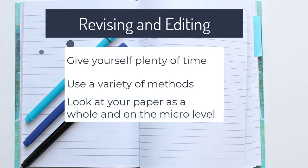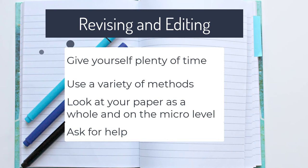Look over your paper both as a whole and at the micro level. Do you have an introduction, body, and conclusion? A clear thesis statement? Are your paragraphs complete? Are you missing any important information? Are your transitions smooth? For smaller things like grammar, it can help to look for one error at a time. If you are uncertain of something, look it up or ask for help. If something seems off to you but you don't know why, double check.